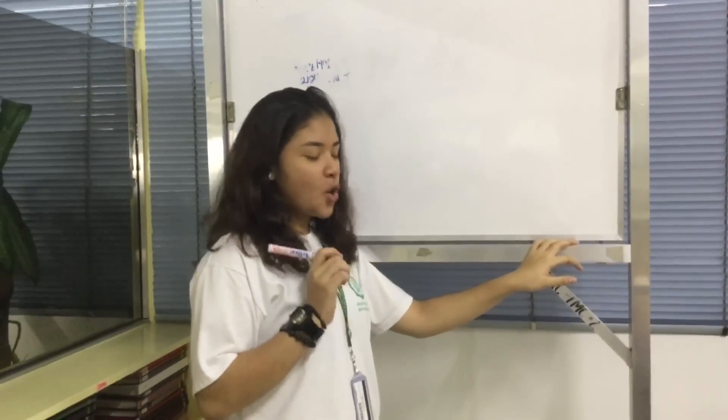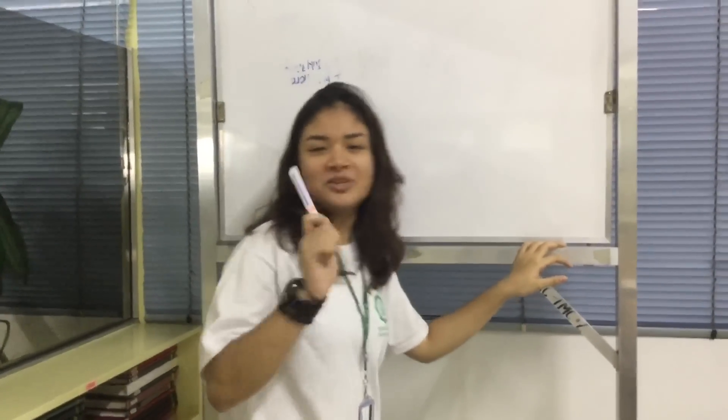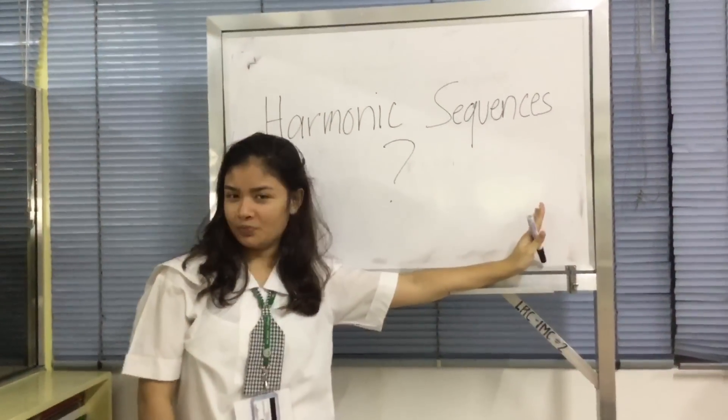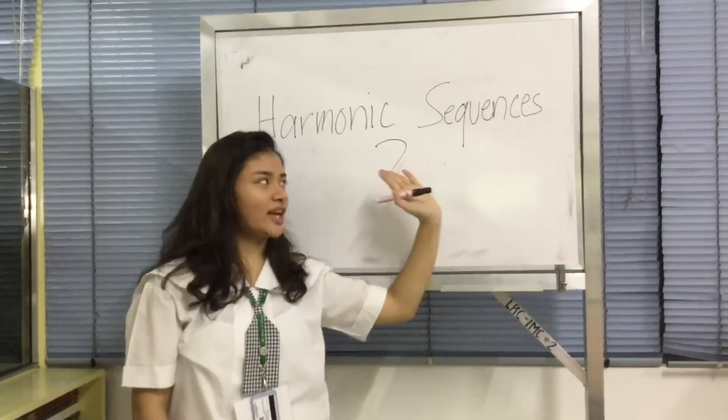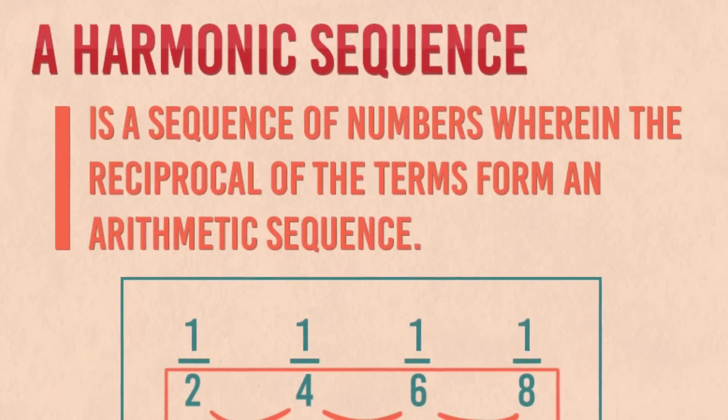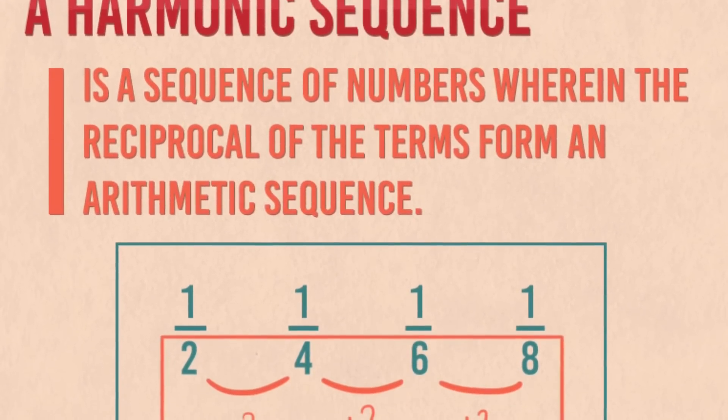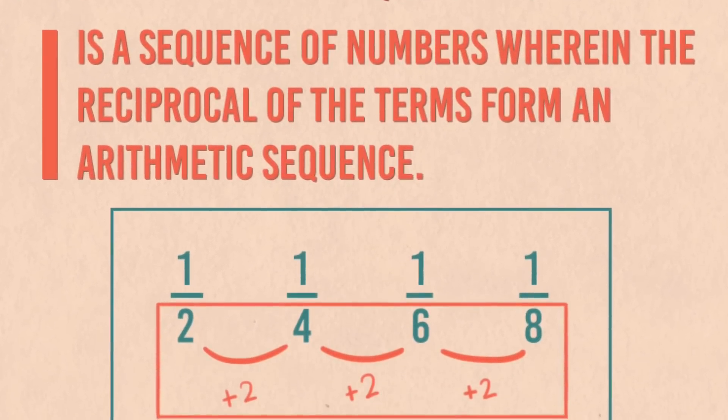So today, we're going to talk about harmonic sequences and harmonic means. What are harmonic sequences? A harmonic sequence is a sequence of numbers wherein the reciprocal of the terms form an arithmetic sequence.